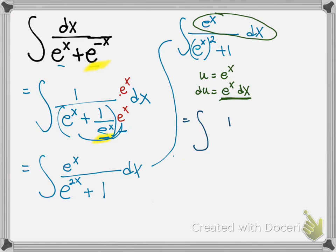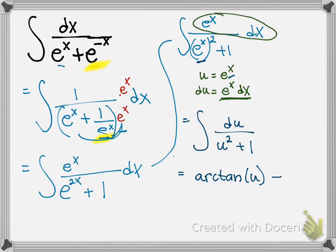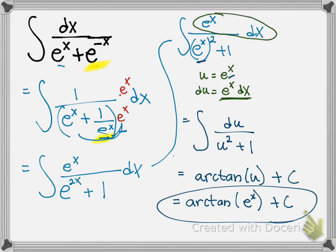This becomes the integral of du over u squared plus 1, which is more straightforward. You might have this one memorized, or you can recall that the derivative of arctangent is 1 over 1 plus u squared. So the antiderivative is arctangent of u, plus c. Substituting back, u was e to the x, so the answer is arctangent of e to the x plus c.